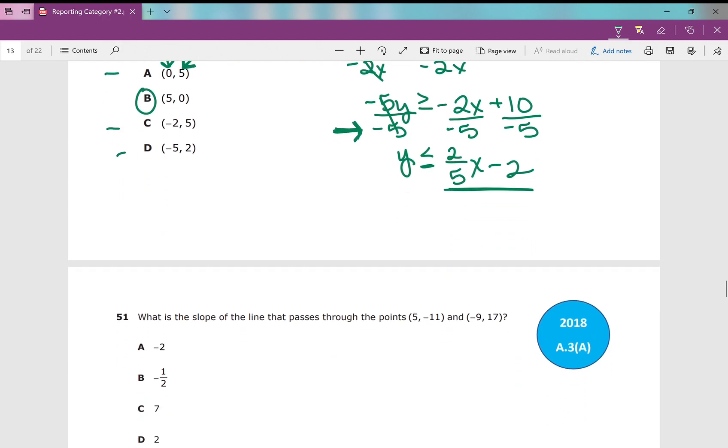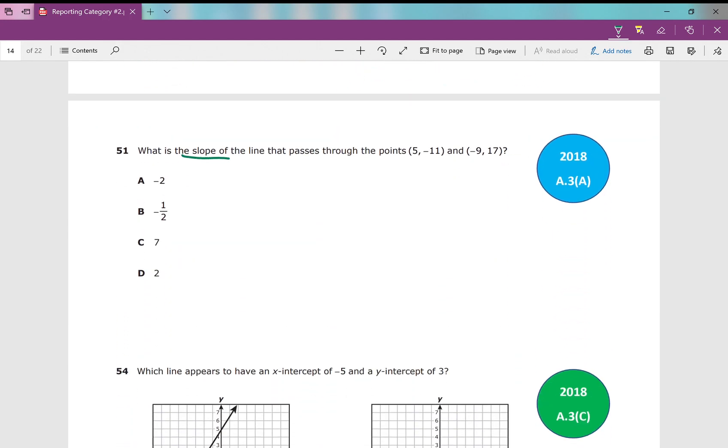Moving right along. We are almost done. Number 51: What is the slope of the line that passes through the points 5, negative 11, and negative 9, 17? What's your test taking strategy? When you're given 2 points, stat edit. Then stat, calc, linreg. If you are on the honors route, I would suggest plugging it into your slope formula, y2 minus y1 over x2 minus x1. Either way, it'll give you the same thing of negative 2.